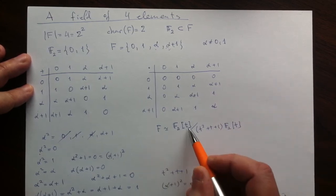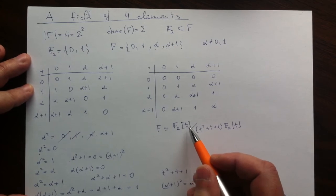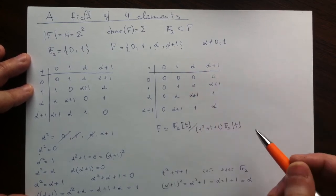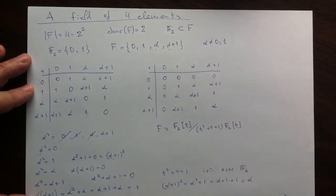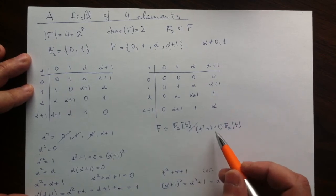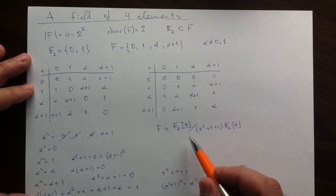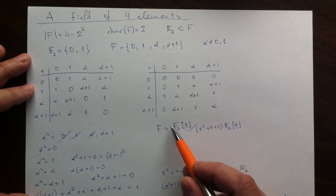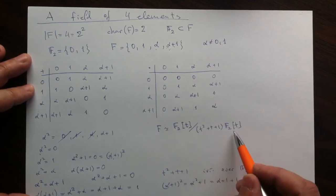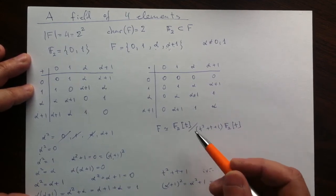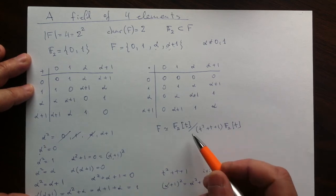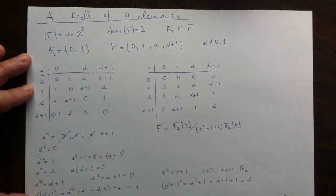Under this isomorphism, the class of the variable is turning into alpha. So that is really a generic construction of fields. We discussed it as our first industrial construction: take some commutative ring, take maximal ideal, quotient by it and get a field. And that way you can construct fields of any finite number of elements.